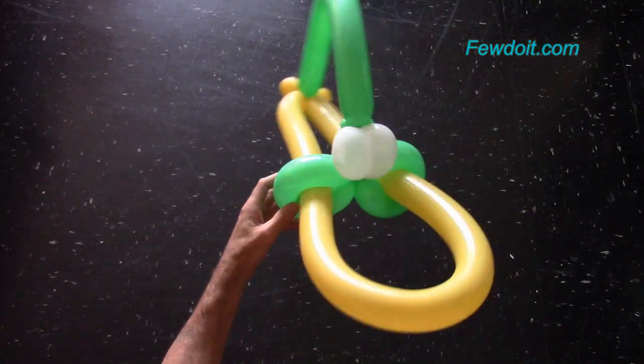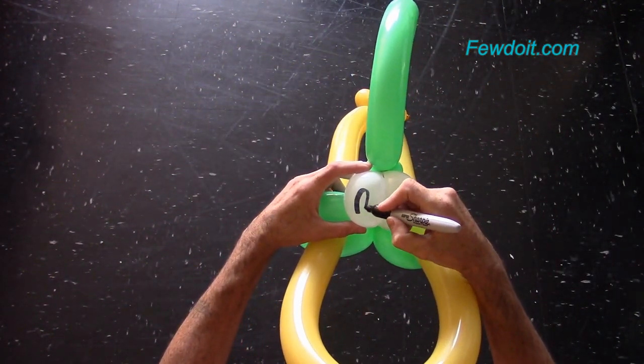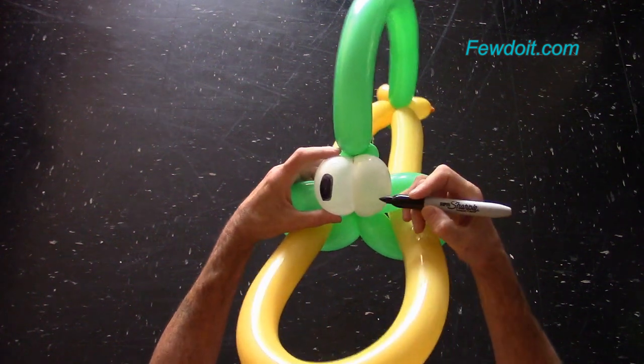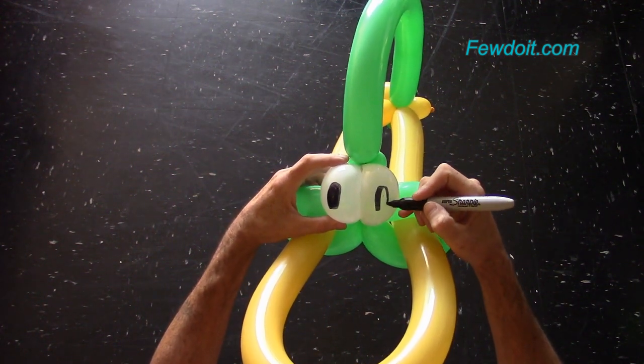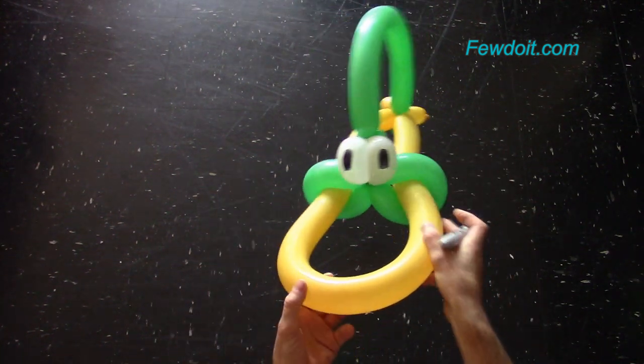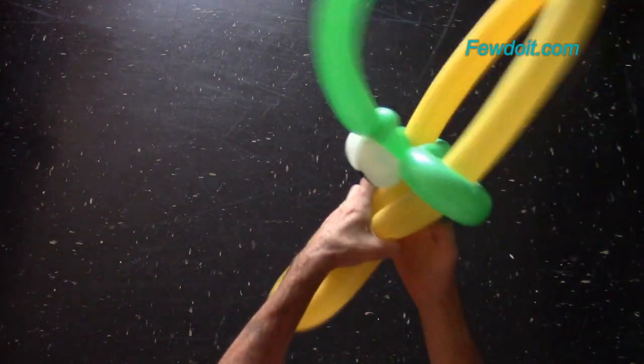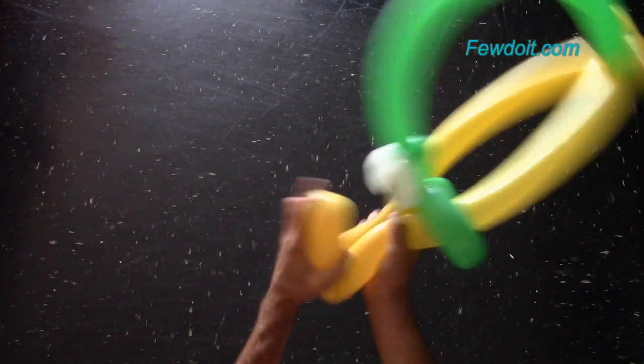Now I am going to use a permanent black marker to draw the eyes. If you want, you can use the head as it is. Or you can bend the yellow balloon to shape the beak properly.